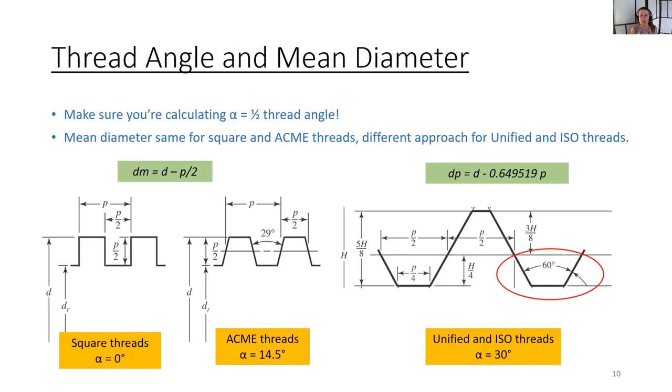For acme threads it is 29 degrees, and for unified and ISO threads it is 60 degrees. For square and acme threads, the mean diameter, DM, is the major diameter minus half the pitch. For unified or ISO threads used in power screw applications, you use the pitch diameter in place of the mean diameter. The pitch diameter is the major diameter minus 0.649519 times the pitch.